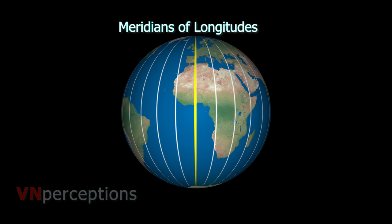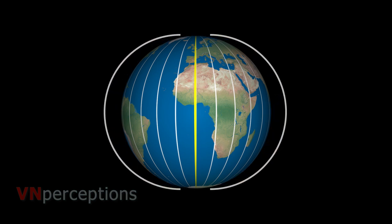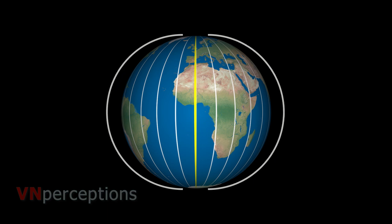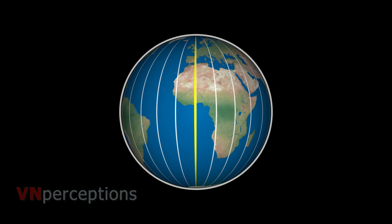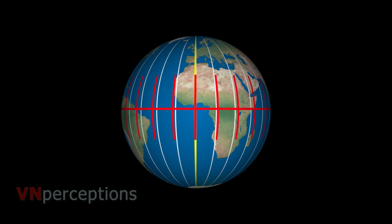These are semicircular lines. Two opposite longitudes together will form one big circle. Totally, there are 360 meridians of longitude. All meridians are of equal length and the distance between any two meridians is not equal. They get closer from the equator to the poles. There is a relationship between longitude and time.